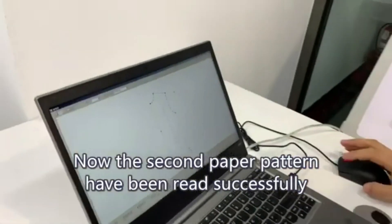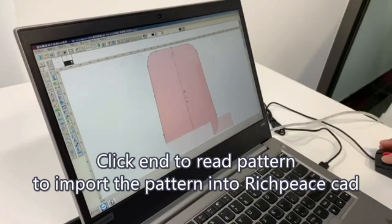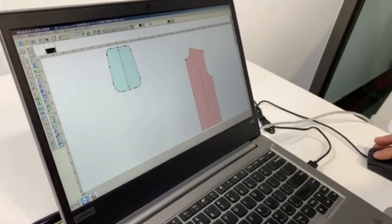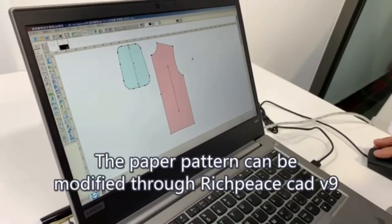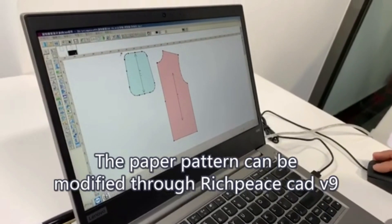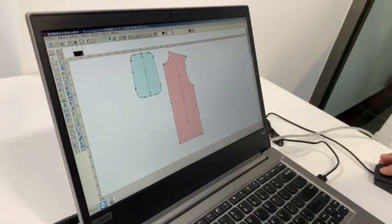Now the second paper pattern has been read successfully. Click N to read pattern. To import the pattern into the Rich-piece 3D, the paper pattern can be modified. That is the use of Rich-piece digitizer.